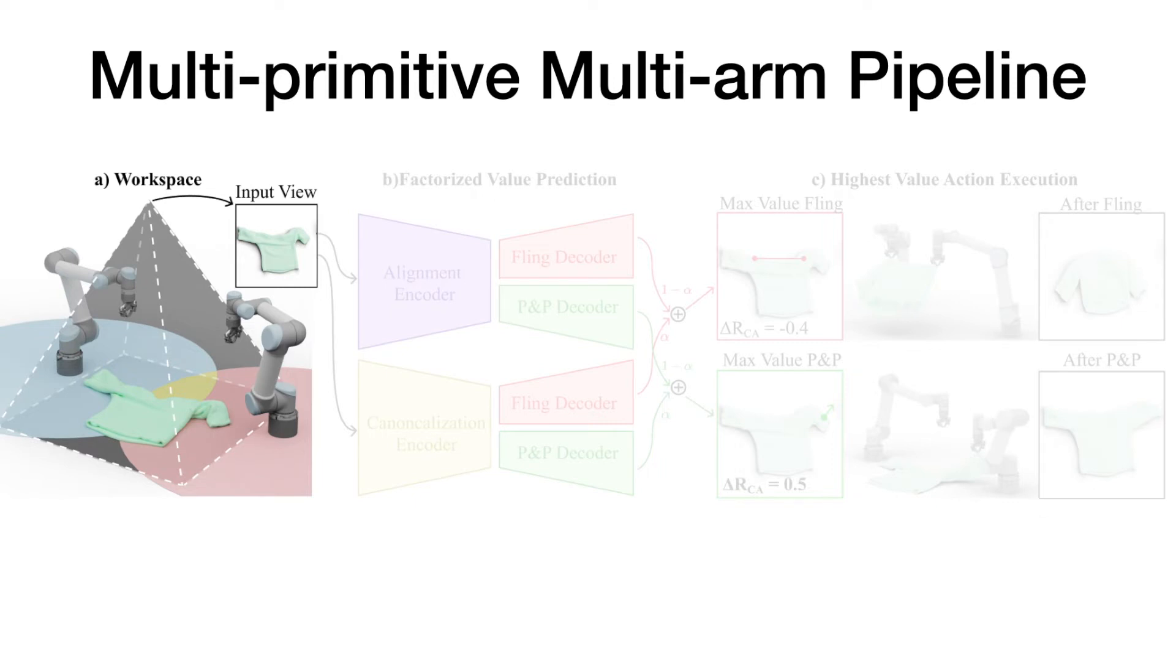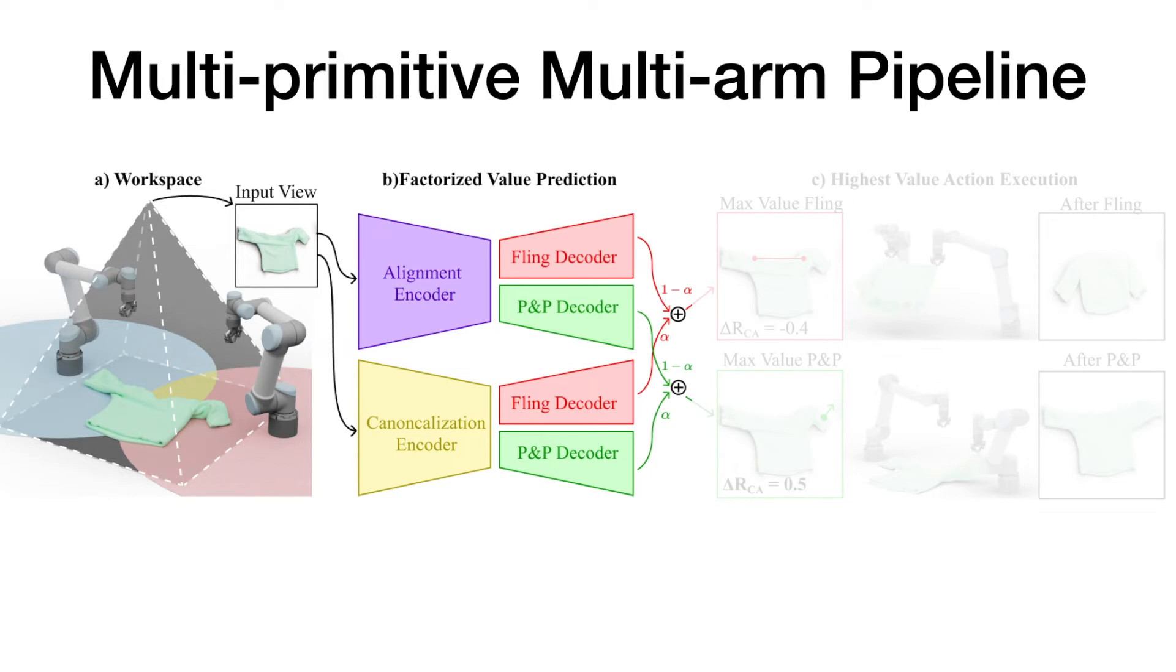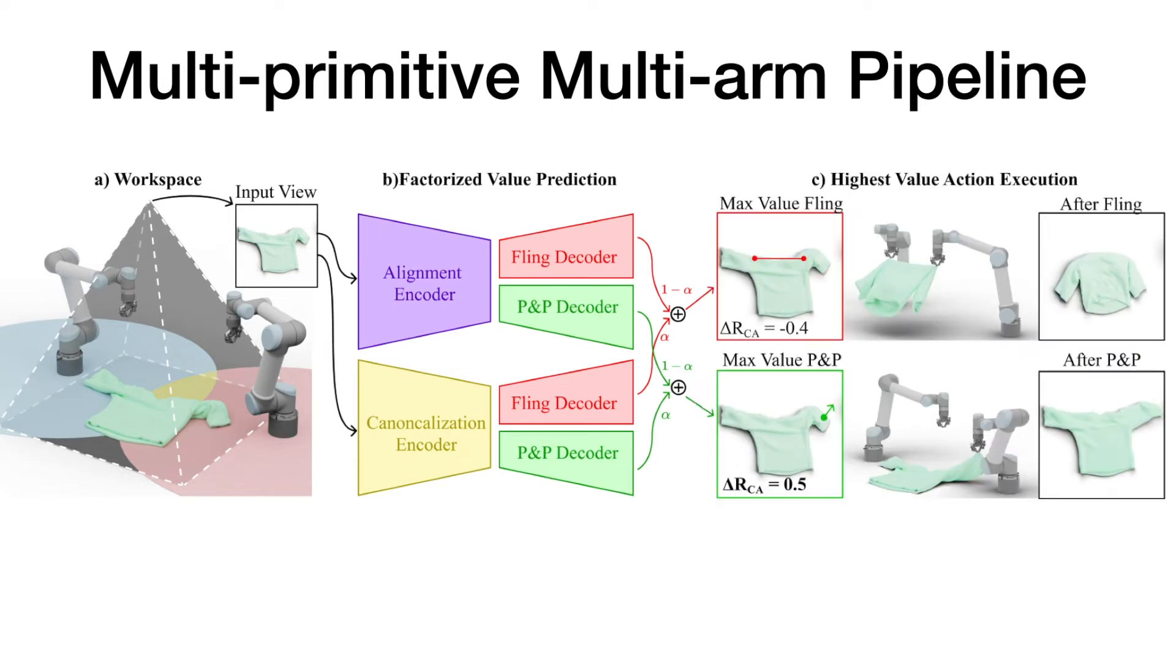From a top-down RGB image, our network first predicts the reward for each action using spatial action maps, then chooses the highest value action. This means that if the best pick and place has a higher value than the best fling, then we execute pick and place over fling and vice versa.